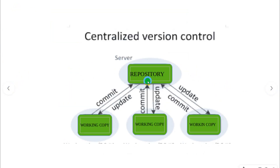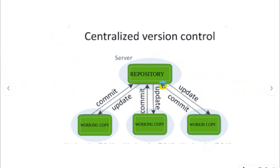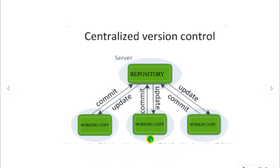The centralized version control system has a server and different working local computers. Unlike the local version control system, there is a central server and different local computers that can commit changes to a shared repository — think of it as a shared database. For example, user one, user two, and user three all connect to this central server.